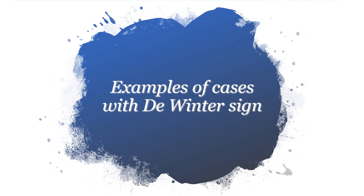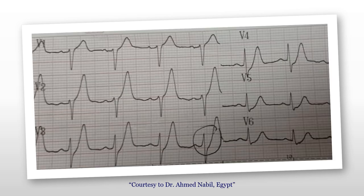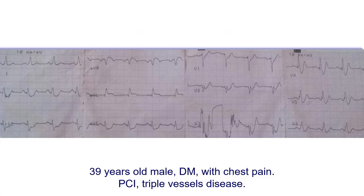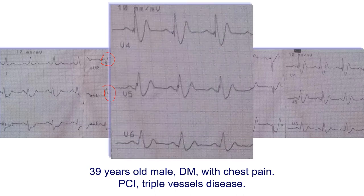Here are some examples of the De Winter sign. In the first case, we can clearly see ST elevation in AVR and the De Winter sign in V2, V3, and V4 — ST depression, upsloping ST segment, followed by a tall symmetrical T wave. Another example from Egypt shows the same pattern clearly. A third example from Egypt involved a 39-year-old diabetic male with chest pain, showing ST elevation in AVR and AVL, and the De Winter sign in V4, V5, and V6.